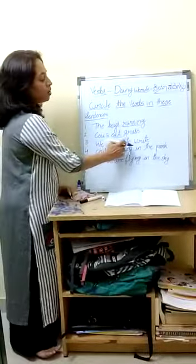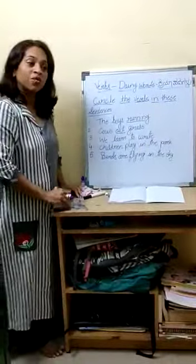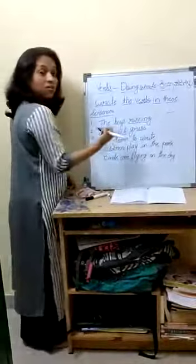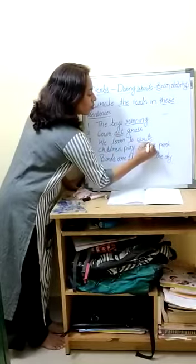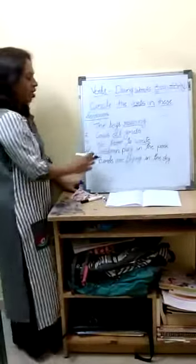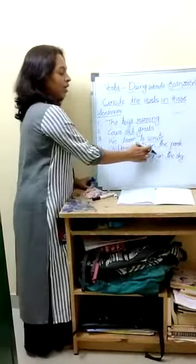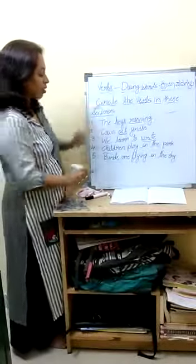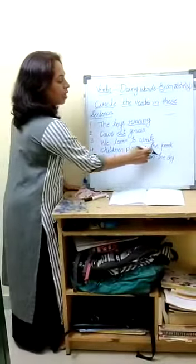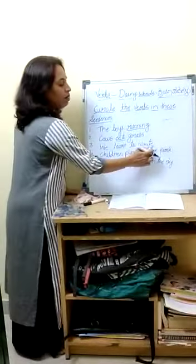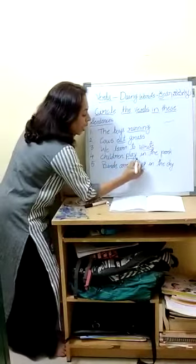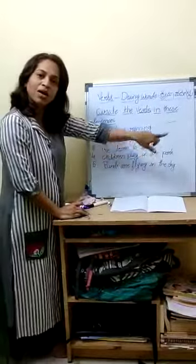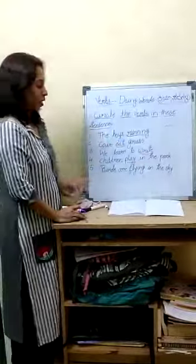Next: We learn to write — what is the verb here? 'Write' is the verb. Next: Children play in the park — what are the children doing? Children are playing in the park, so 'play' is the verb doing word. They are playing in the park.